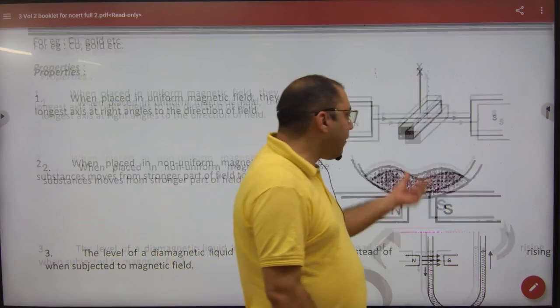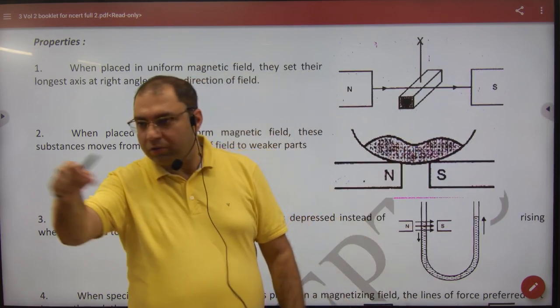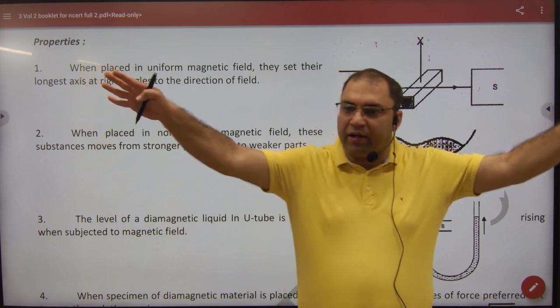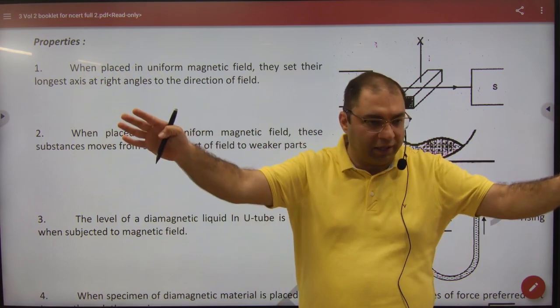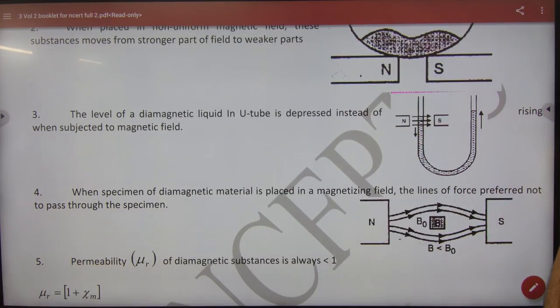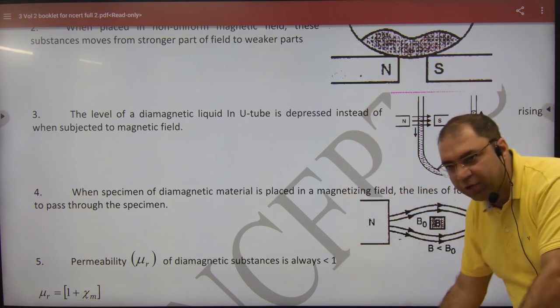Second property. If you keep them in a powder form, okay, powder, and here strong magnetic field, this powder will run away towards weaker field. So strong from weak to weak. If you take them in a liquid form and put strong field here or weak, then strong from weak to weak, the level will go down.